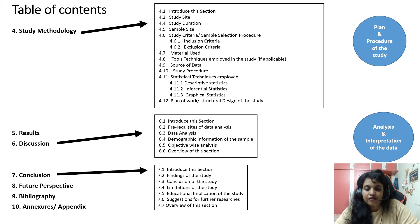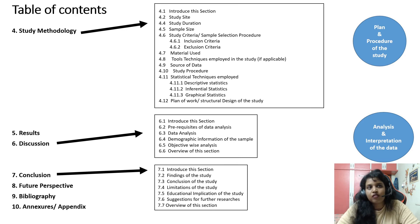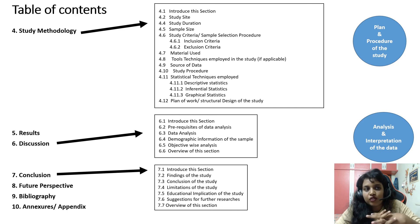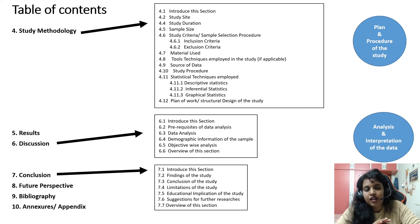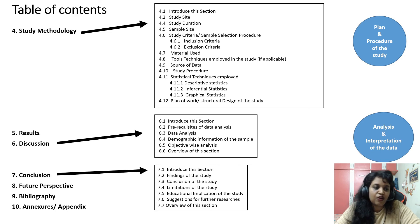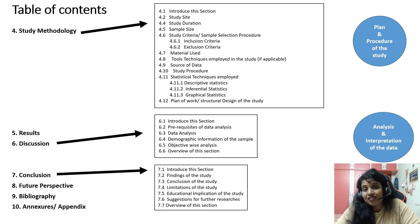The ninth section is bibliography. There is a difference between bibliography and references: bibliography includes all the websites, books, and research papers you read and from which you gained understanding to add information into your thesis. References, on the other hand, are direct statements or facts you have copied as-is from other research sources.